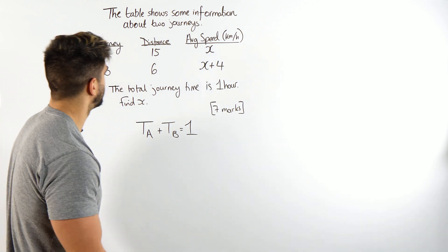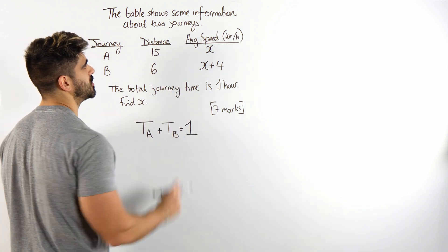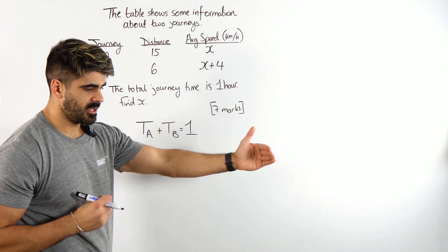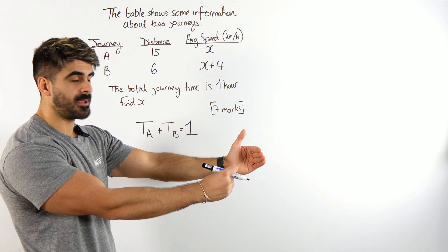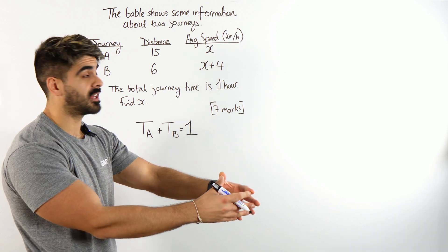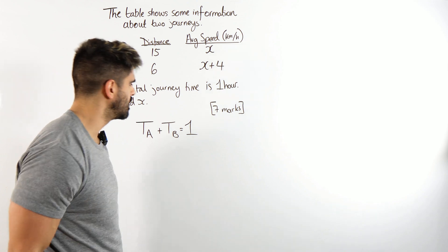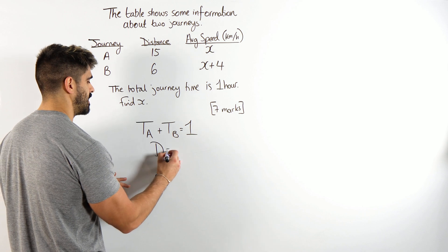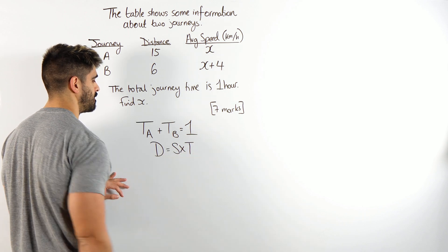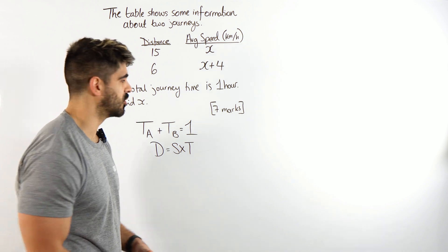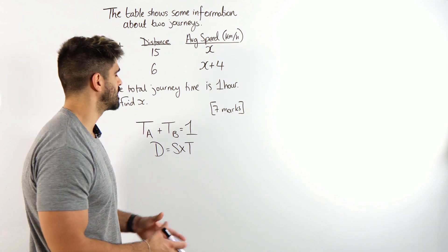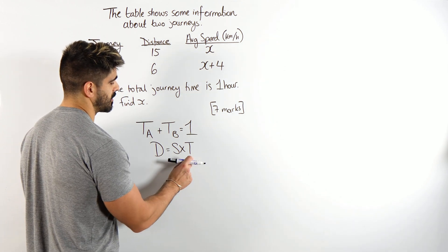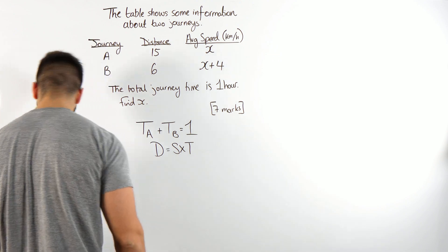Now, what is the formula for time? The average speed formula assumes acceleration is zero, so distance is speed multiplied by time. Some of you guys might remember a triangle — I don't like triangles, there's already enough you guys need to remember. So I just write this: distance equals speed times time. I'm going to rearrange for time: time is distance divided by speed.